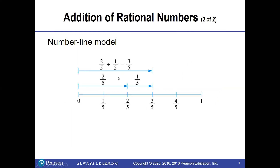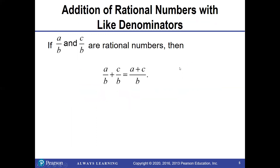On the number line model, if I want to add two-fifths and one-fifth, we start at zero, go to the right two-fifths, then add another one-fifth, which gets us to three-fifths. So we have two different models, but we're going to have a rule that deals with rational numbers.